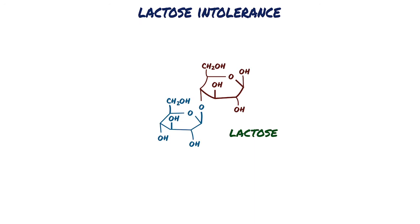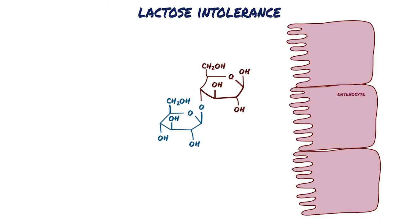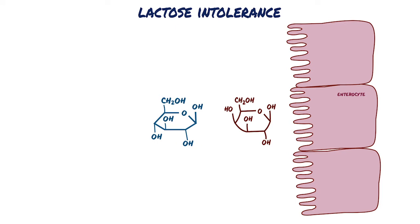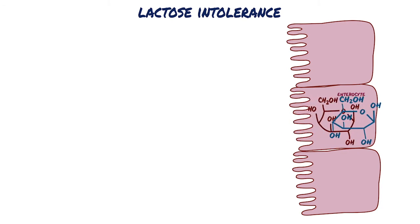Lactose is a large sugar molecule that is made up of two smaller sugar molecules, glucose and galactose. In order for lactose to be absorbed from the intestine and into the body, it must first be split into glucose and galactose. The glucose and galactose are then absorbed by the cells lining the small intestine.